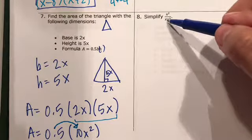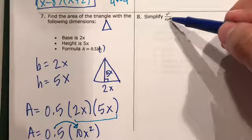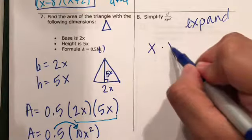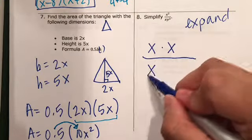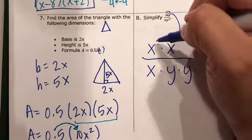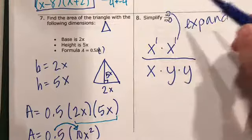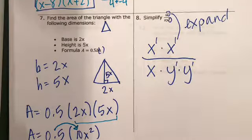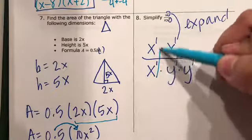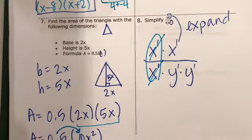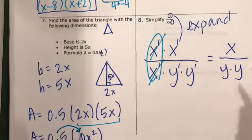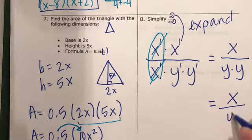Simplify x squared divided by x times x. I'm sorry, times y squared. So we're going to expand again. x times x divided by x times y times y. So this is a 2, so I have 2 x's. This is a square, so I have 2 y's. So in this case, we can, these two will go away. And when I simplify, I'm left with x divided by y times y. So my answer is going to be x over y to the second.